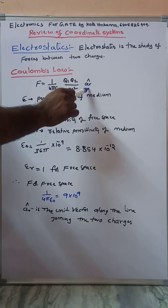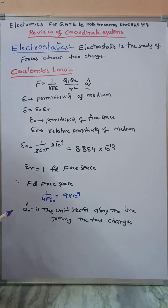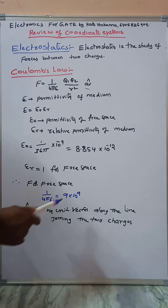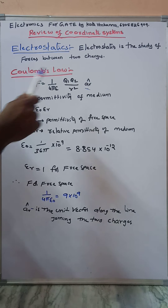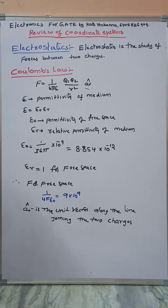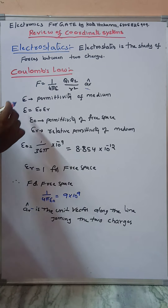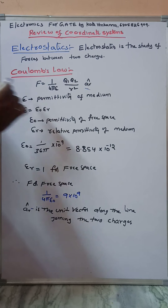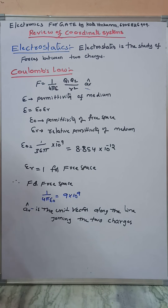AR is the unit vector along the line joining the two charges. So the complete form of Coulomb's law is F equals 1 over 4 pi epsilon times Q1 Q2 divided by R squared, times AR.